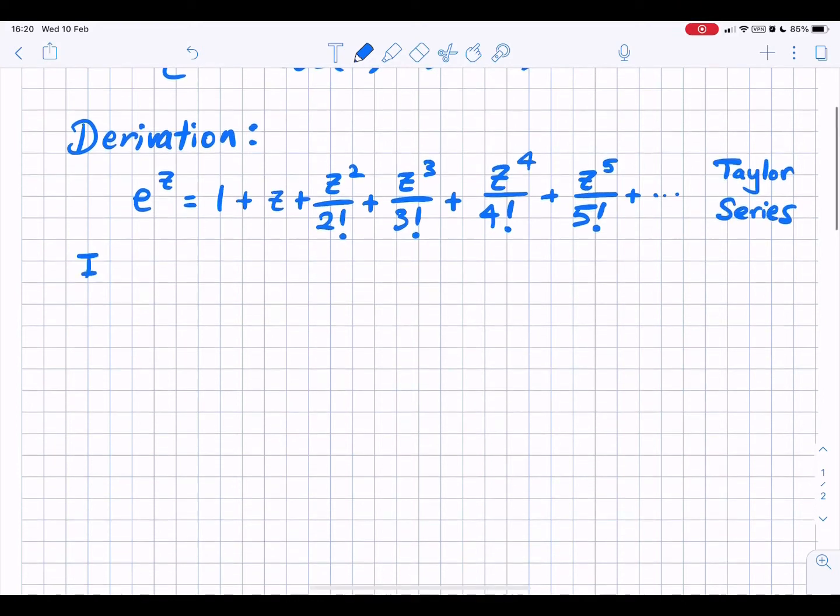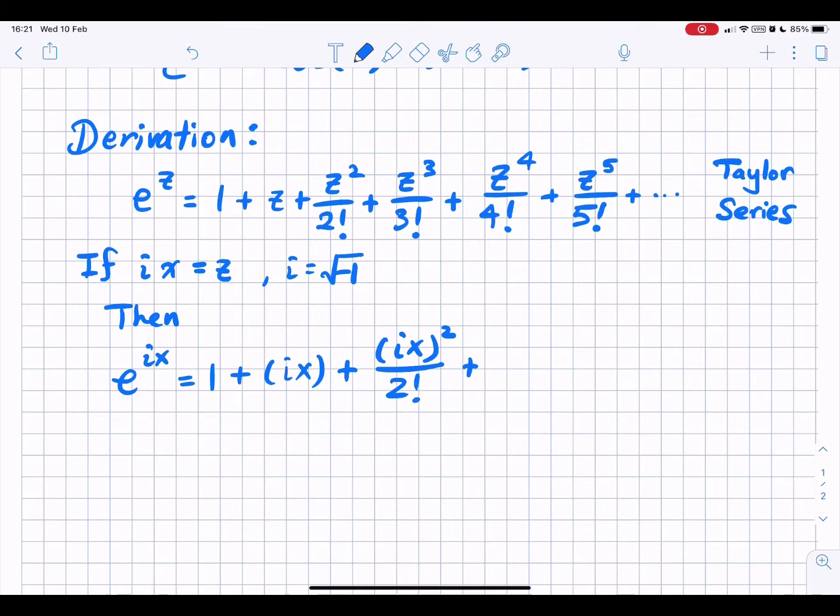If we now set z equals to ix, where i is the square root of negative 1, then we can write e to the power of ix as 1 plus ix plus ix squared over 2 factorial plus ix to the third power over 3 factorial, etc.